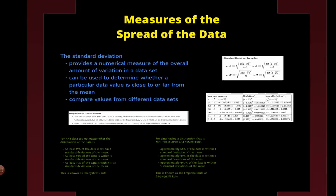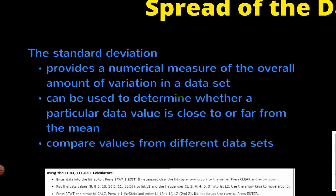Spread is measured using standard deviation, which gives us a number describing how wide the data is dispersed. Remember the interquartile range gave us an idea of spread, but not a single value. The standard deviation gives you a value by calculating how each value differs from the mean, squaring those differences, and then standardizing by dividing and taking the square root.